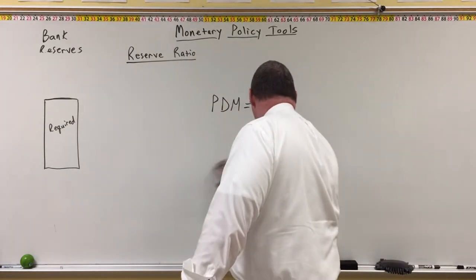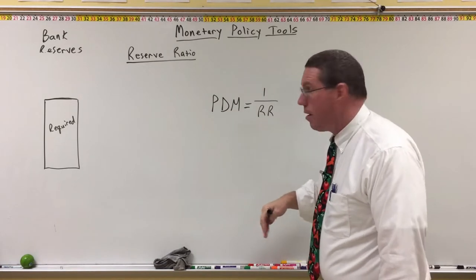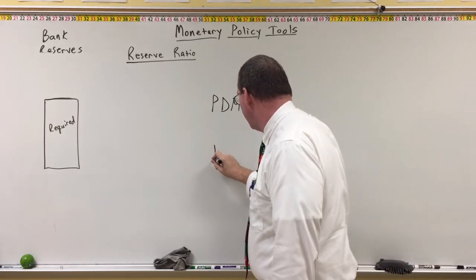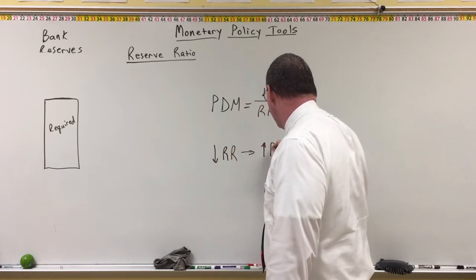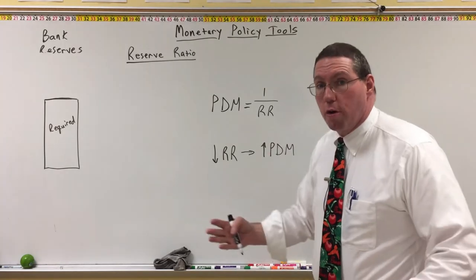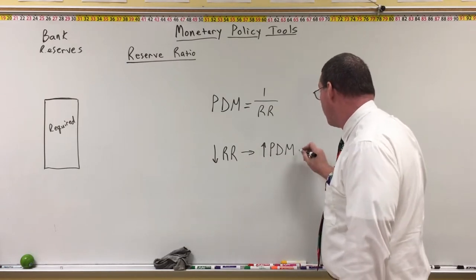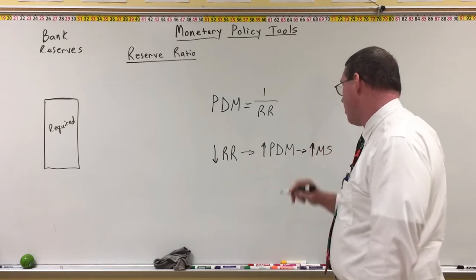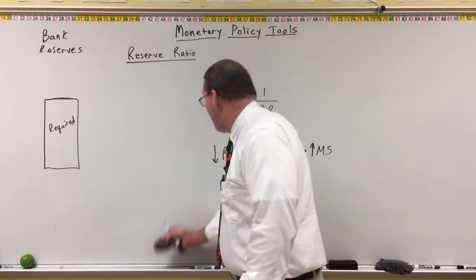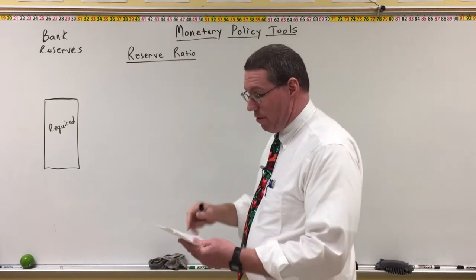Here's the key math: when the denominator of a fraction decreases, the value of the fraction increases. So a decrease in the reserve ratio leads to an increase in the potential deposit multiplier, which leads to more — and larger — money creation. Conversely, if the reserve ratio is raised, the potential deposit multiplier goes down and the money supply goes down.